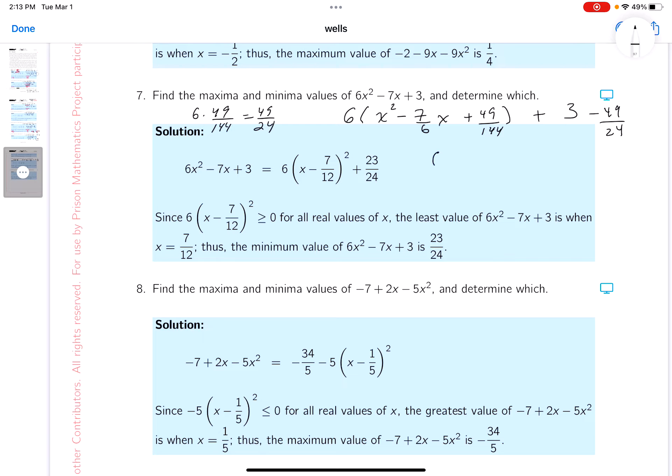All right, let's write this down now. You get 6x minus 7 twelfths squared plus, I've got to do this now. Well, that's going to be what? 3 times 24 is 60, 72. So it's going to be 23 24ths.